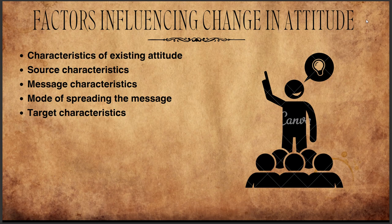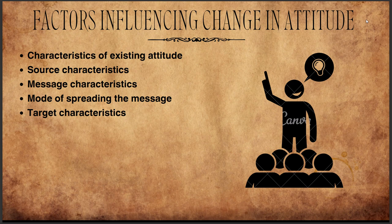What are the factors influencing the change in attitude? First is characteristics of the existing attitude — a positive attitude can be easily subjected to change, but a negative attitude is difficult to change. Next is source characteristics — source attractiveness and credibility are two important factors. When the source is attractive or credible, attitude change occurs more easily. Product sales increase more when publicized by experts or charismatic personalities, which is why brands use models and actors.